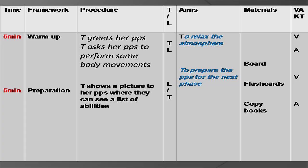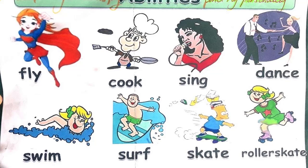Then I move to preparation. The first P stands for preparation. Before the presentation, I want to prepare my pupils for the target item. What I did — I showed them a picture where they could see a list of abilities: fly, cook, sing, dance, swim, surf, skate, and roller skate. All these are abilities. And then I ask them questions. The aim behind asking questions is to elicit — to get ideas and sentences from my pupils in order to write them on the board as examples.